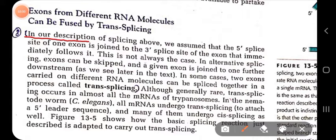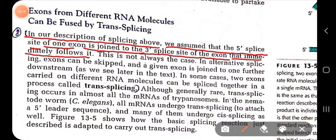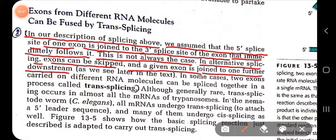Normally in the splicing process, the five prime splice site of one exon is joined to the three prime splice site of the next exon. But this is not always the case. In alternative splicing, exons can be skipped and a given exon can be joined to one further downstream in the three prime direction.